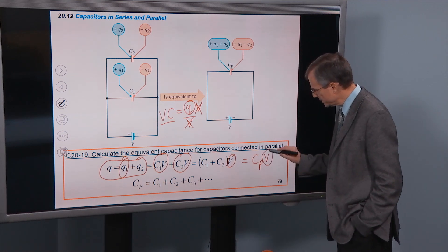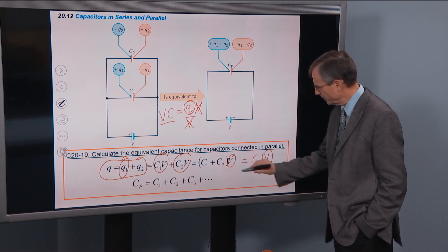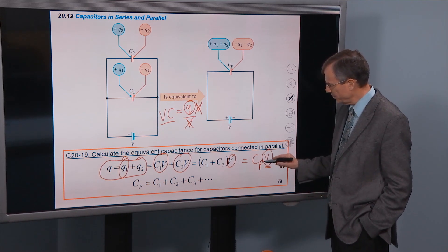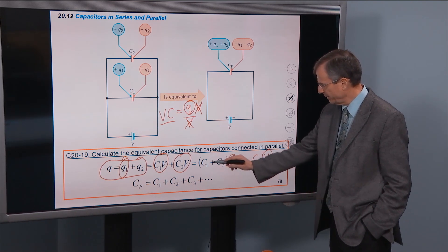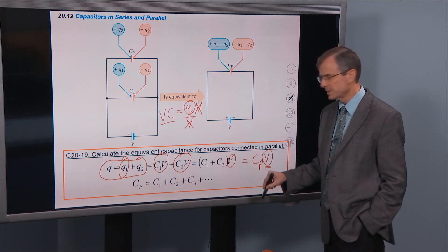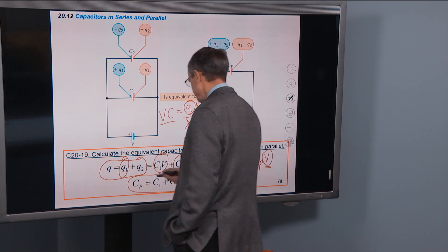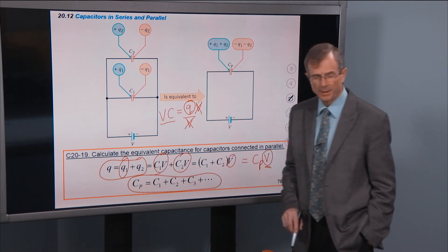But there's a v in both, both here and here. And so to find out what cp is, I just divide through by v and I get that cp is c1 plus c2.